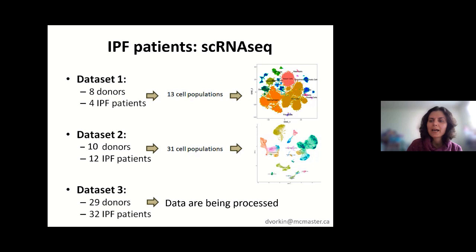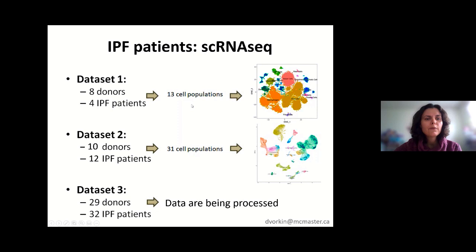The third dataset is still being processed, so I will not talk about it today, but I'll be talking about the first two datasets. After obtaining the data, I processed it and then defined the cell populations. That's one of the important steps in many projects involving single cell RNA-seq. In the first dataset I found 13 cell populations and in the second one I found 31 cell populations.